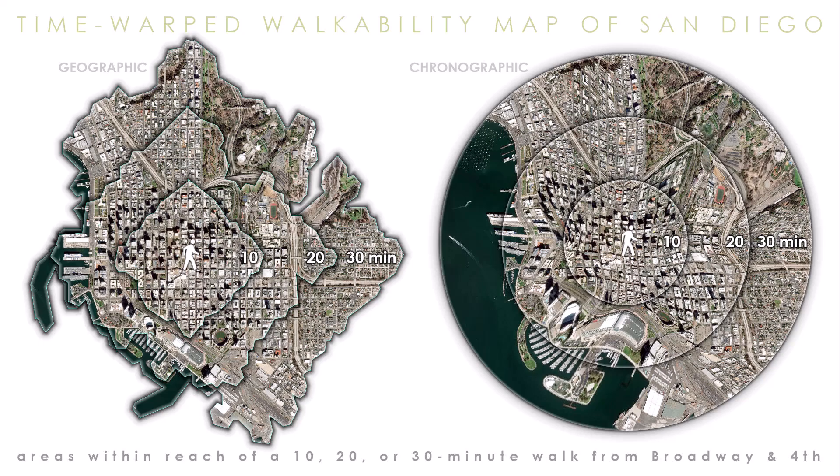I'm going to show you how to make this time-warped walkability map. It contorts true geography to better fit our conception of walking distance. It's based on an idea from Waldo Tobler, and we will misuse GIS to make ours.